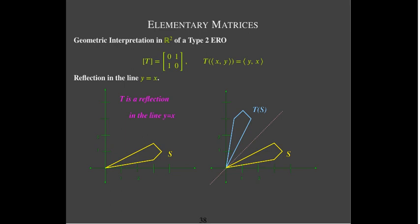There's only one type 2 ERO — swapping rows one and two is the same swap either way. Applied to the two-by-two identity matrix, we get the anti-diagonal matrix with ones along the anti-diagonal. Multiplying by this interchanges the x and y components, so the result is the reflection of the point or set of points in the line y equals x.